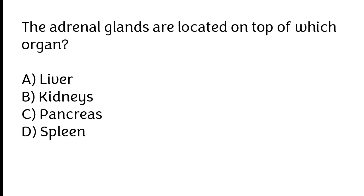Adrenal glands are located on the top of which organ? Liver, Kidneys, Pancreas, Spleen. The correct answer is Option B. The adrenal glands are located on the top of kidneys.